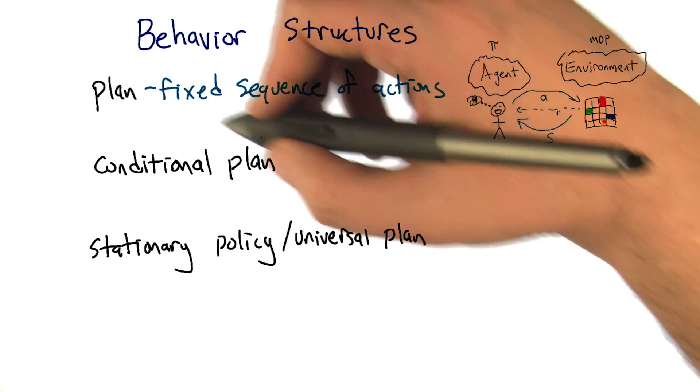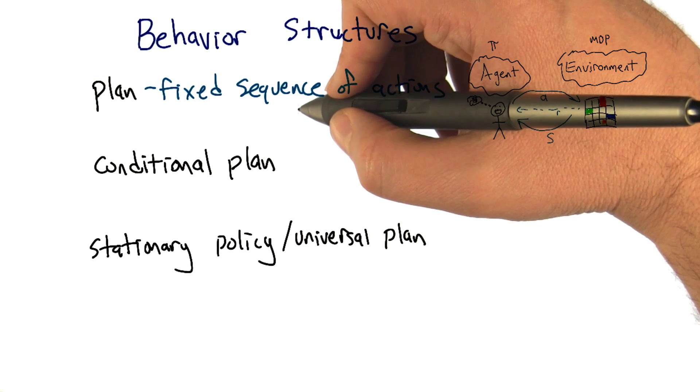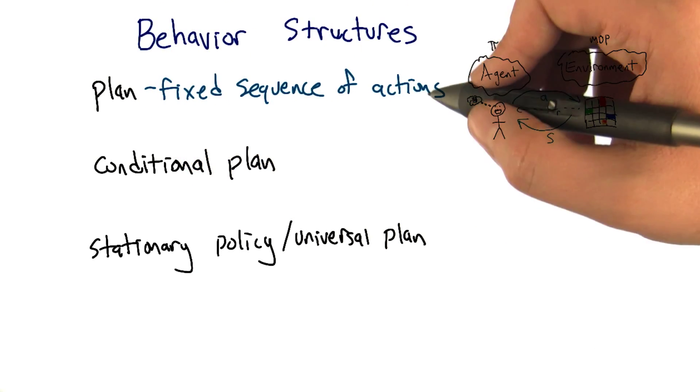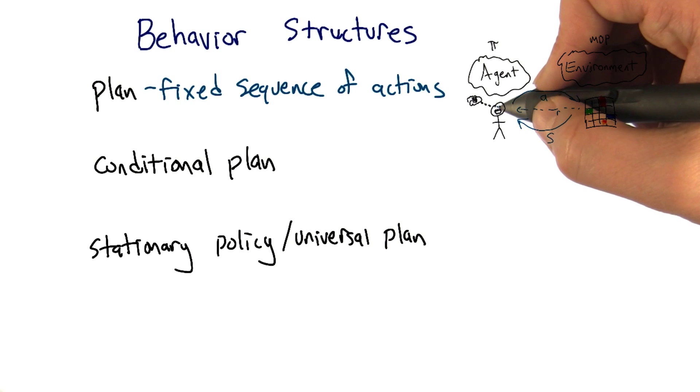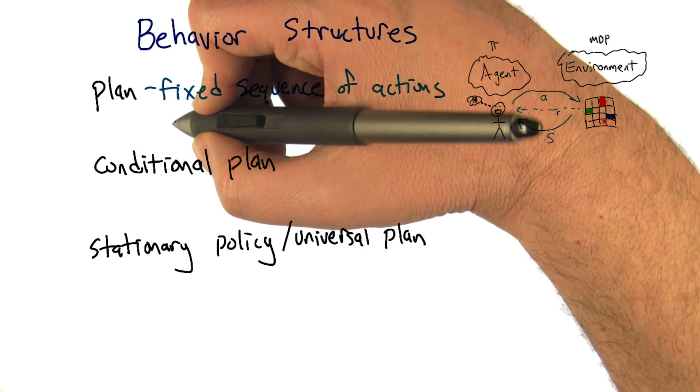But in fact, what's a problem with this? Why can't we, in general, just execute plans in order to satisfy the kind of goals that we're trying to satisfy? I'll say two things.